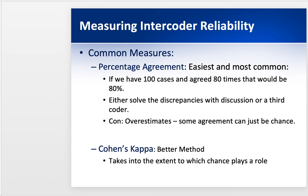The most common and easiest method is percentage agreement. Let's say I had a hundred cases and me and another coder agreed 80 times out of a hundred — that's 80%. It's very easy to do because we can all do percentage math. But there is a disadvantage: sometimes agreement could be by chance, kind of like if you're taking a multiple choice test and you just get it right even if you don't know it. So maybe we just agree by chance.